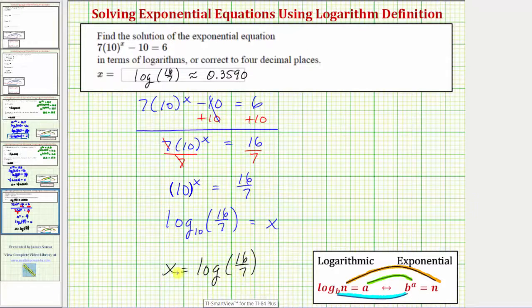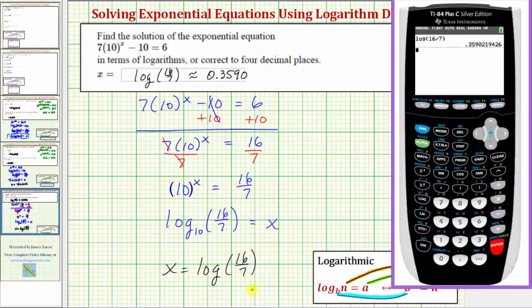Before we go, let's verify that our solution is correct by making the substitution for x in the equation. So on the left side of the equation, we would have 7 times 10 raised to the power of common log 16/7.